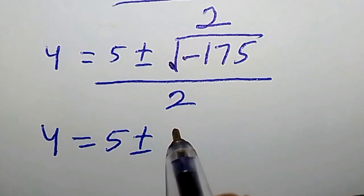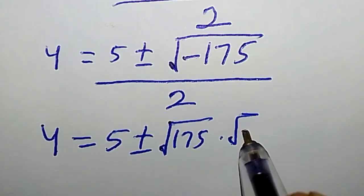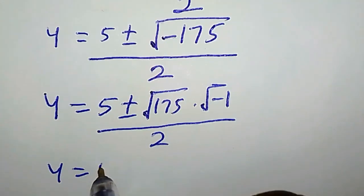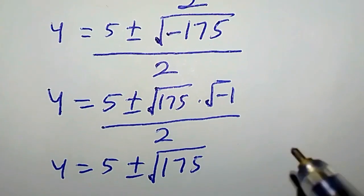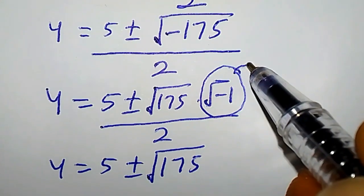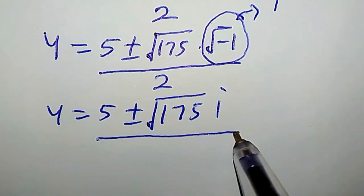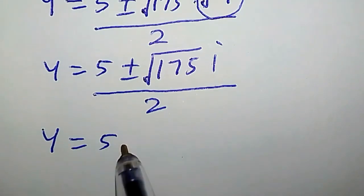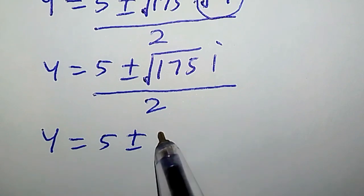So y equals 5 plus or minus square root of negative 175, divided by 2. This can be written as square root of 175 times square root of negative 1, divided by 2. We know from complex numbers that square root of negative 1 is simply i, so we have i here.